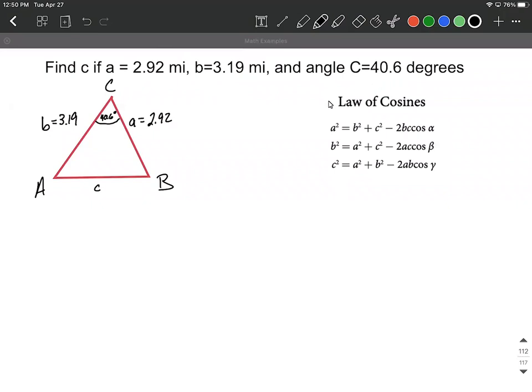I've gone ahead and drawn a triangle and labeled everything. You always make sure that c is opposite of C, so angle C is opposite of side length c. Same things with a's and b's.